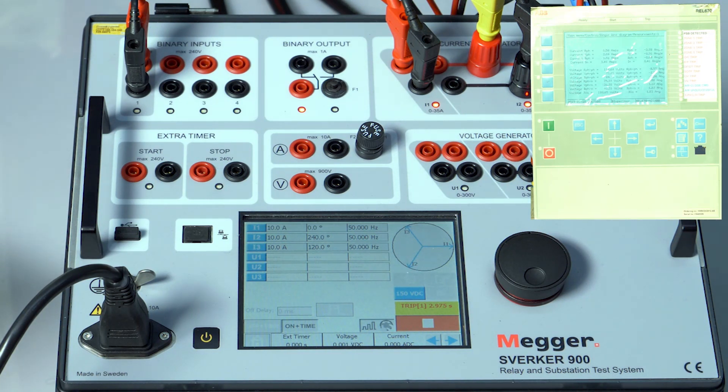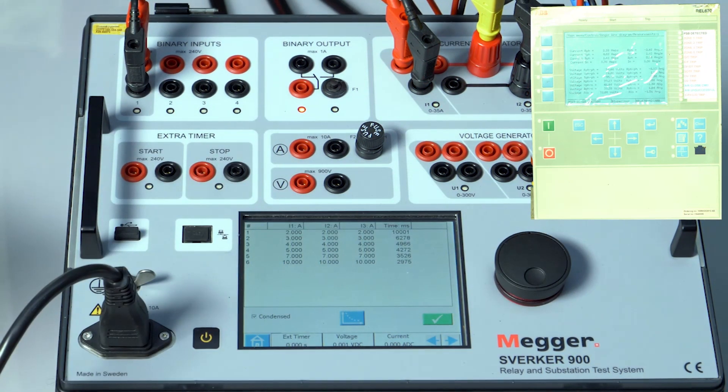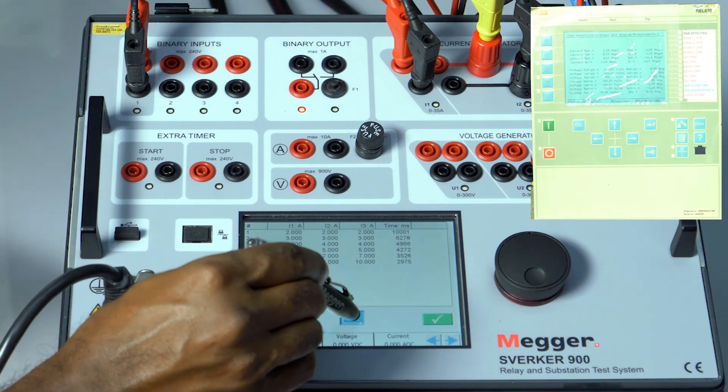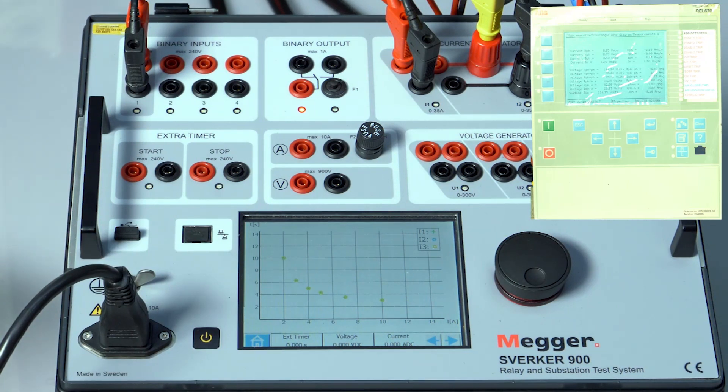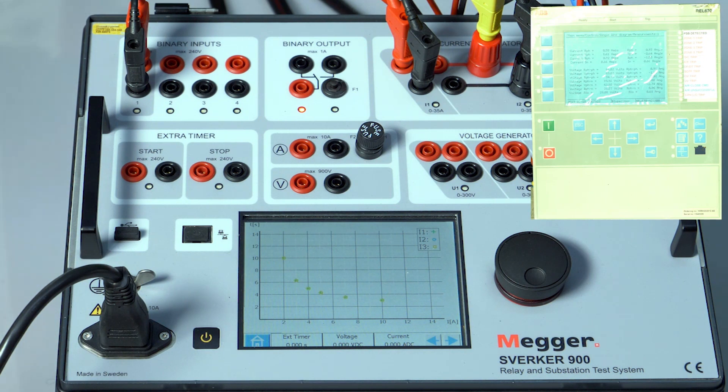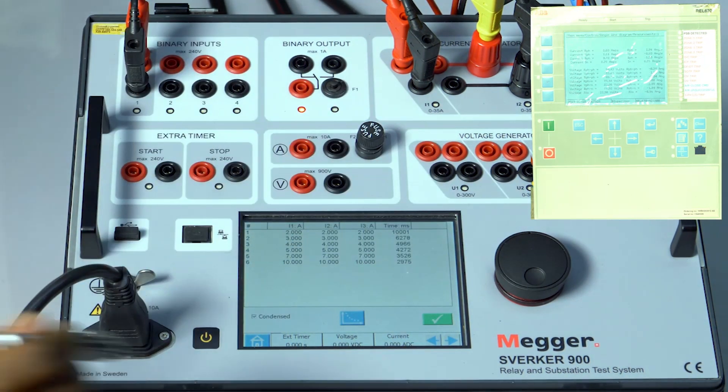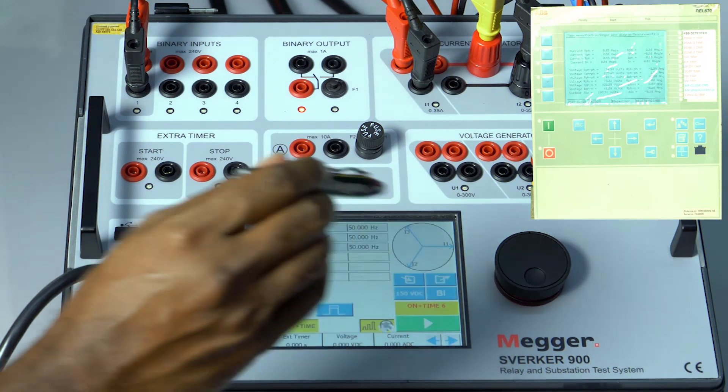On completion of all the tests, we have to press the stop button. Once we press the stop button, we get a table showing the results. Now press the graph icon to view the results in a graphical manner. In this example, we have configured an IDMT curve and plotted the results for the same. To move back to the original screen, press on this icon and call the tick mark. You can repeat for as many points as you want.